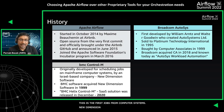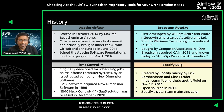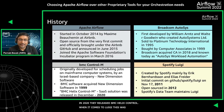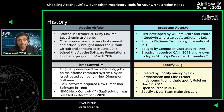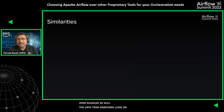BMC acquired New Dimension Software in 1989, and in December 2020 they released BMC Helix Control-M, which is a SaaS solution version. When it comes to Spotify's Luigi, it was primarily created by Erik Bernhardsson and Elias Freider from the Spotify team. The initial commit to GitHub was in 2011, it was open-sourced in 2012, and Spotify's data team currently maintains Luigi.